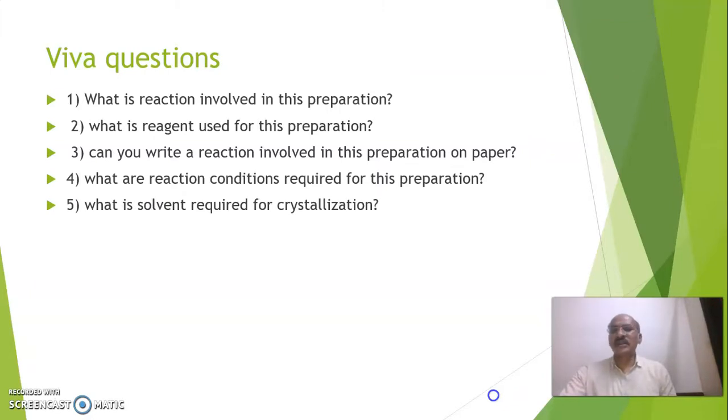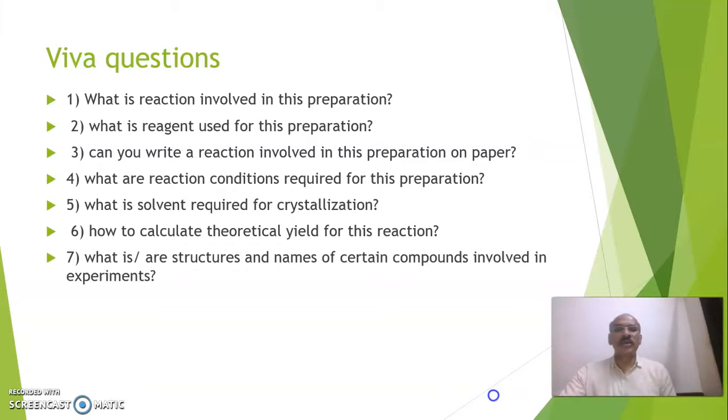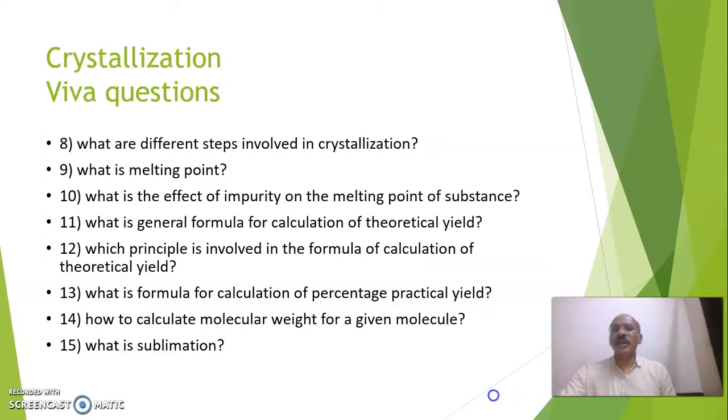Now solvent for crystallization - ethyl alcohol again. On the basis of law of conservation of mass, you should be able to write formula for theoretical yield calculation. You have to remember what is molecular weight, how to calculate that molecular weight, and you should be able to write name, molecular formula, structural formula for all the molecules which we are using in this experiment. And these are typical questions for crystallization.